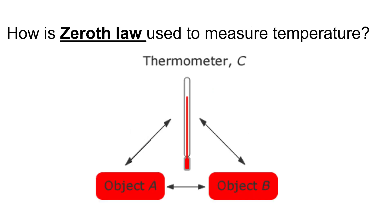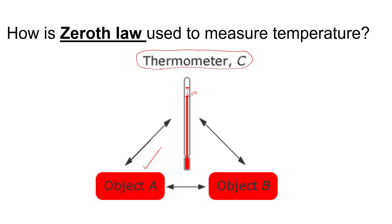To apply the 0th law for temperature measurement, we replace body A with a thermometer. So we have a thermometer C, object A, and object B. Object A is in equilibrium with object B — they have the same temperature. If they are at different temperatures, the readings will be different. These readings are used to measure temperature.